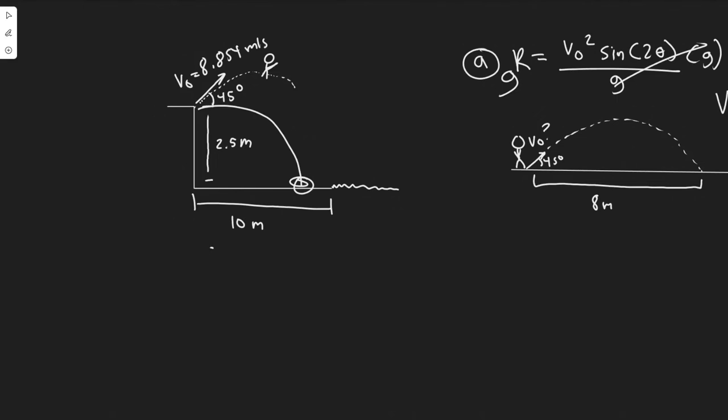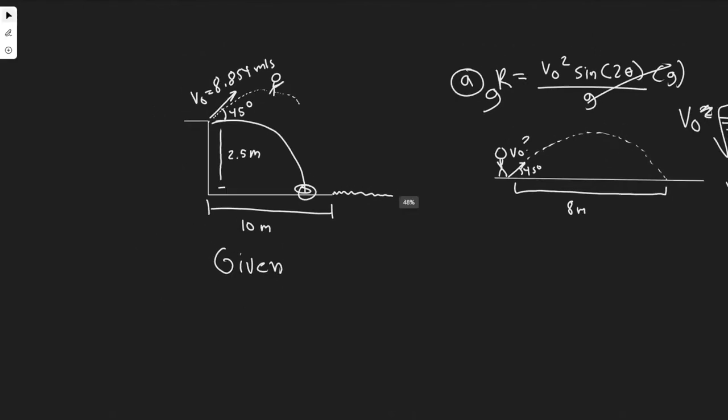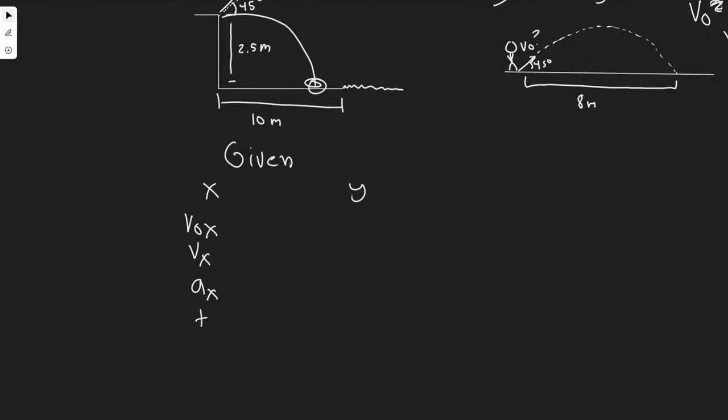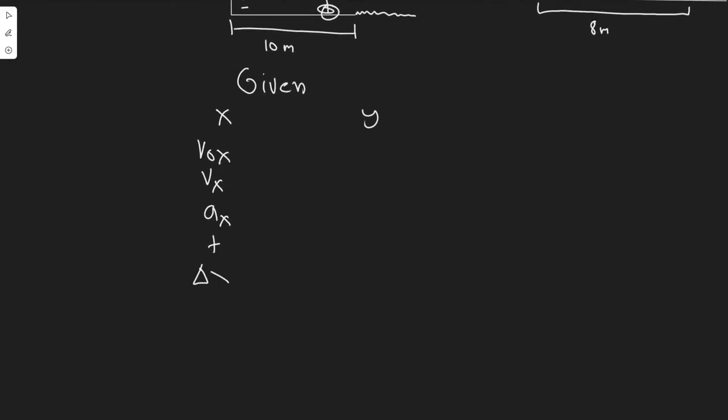First thing I always like to do is write out my given, and when we write that given in two dimensions, we do it in the x direction and in the y direction. I'm going to write out all my variables: V₀x, Vx (initial velocity, final velocity), acceleration in the x, time, and then Δx, my change in position. Here are our five main kinematic variables. Let's do it in the y, too.